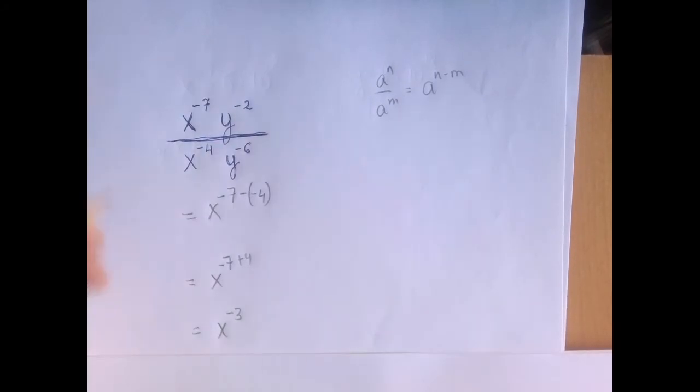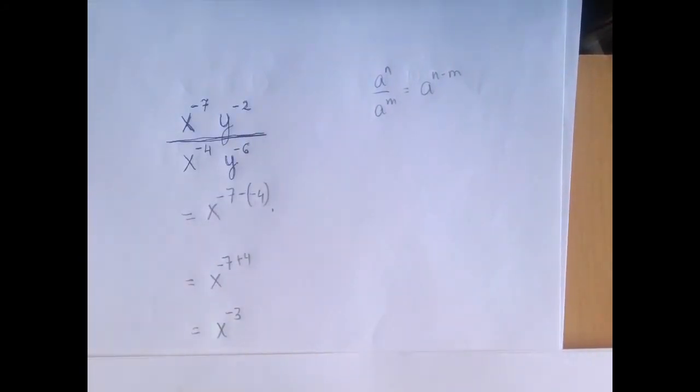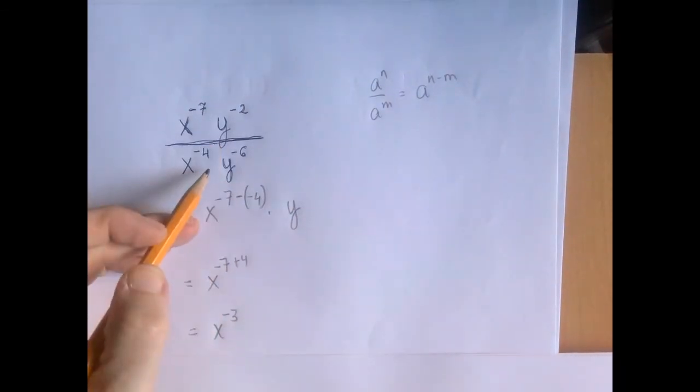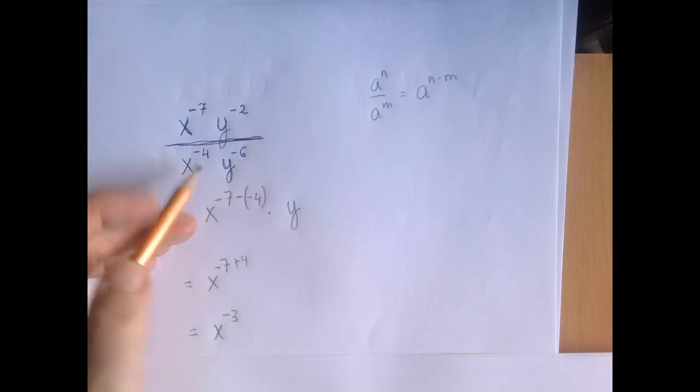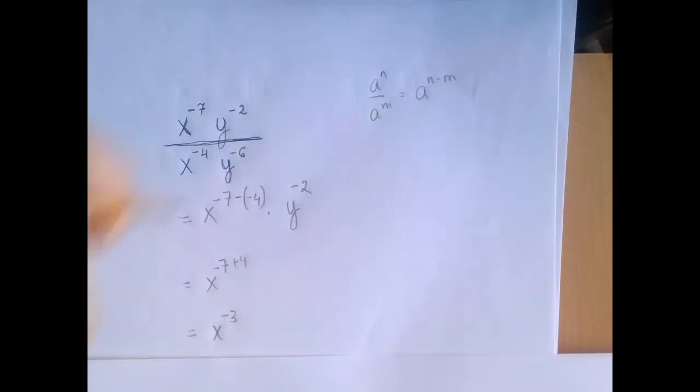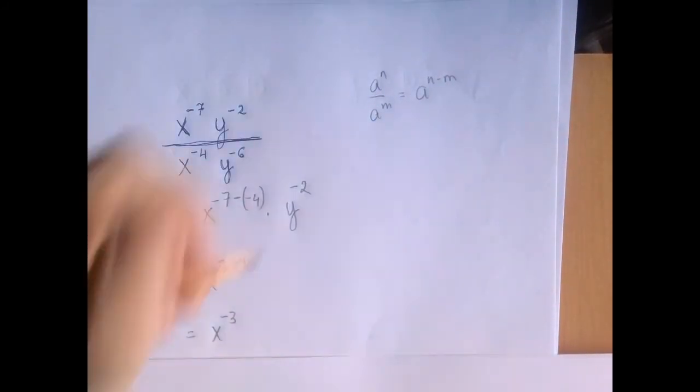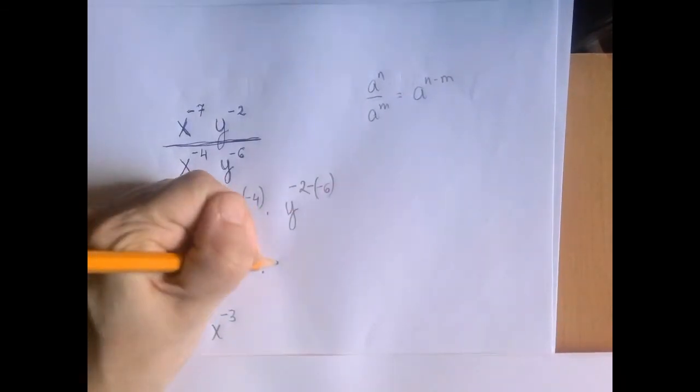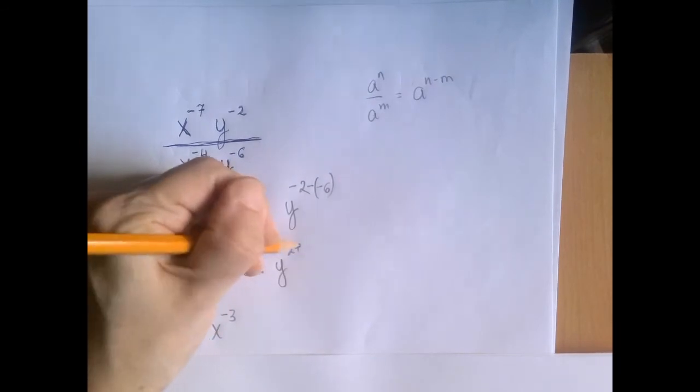For the y, we are going to apply the same rule. So y to the negative 2 divided by y to the negative 6 is the same as when we subtract the exponents. So y to the negative 2 minus negative 6, which is y to the negative 2 plus 6, which is y to the fourth.